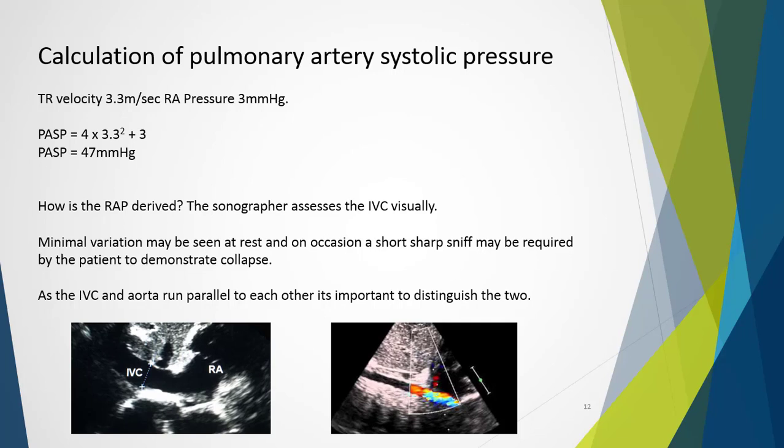Minimal variation may be seen at rest. On occasion, a short sharp sniff is required by the patient to exaggerate the effect and demonstrate more obvious collapse. As the IVC and aorta run parallel to each other, it is important to distinguish the two: the aorta is medially positioned, pulsatile, and not affected by respiration. Applying colour Doppler to the subcostal window shows red flow — blood moving toward the probe. The IVC is slightly laterally positioned, less pulsatile, may have respiratory variation, and shows blue flow — blood moving away from the probe toward the heart.